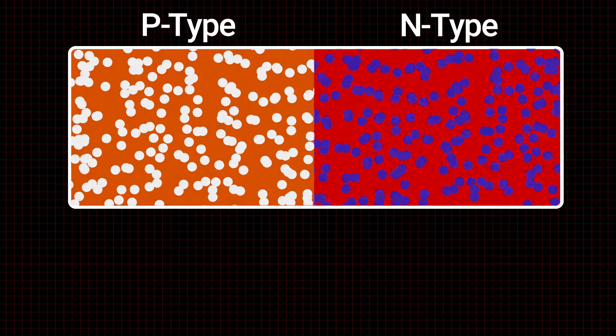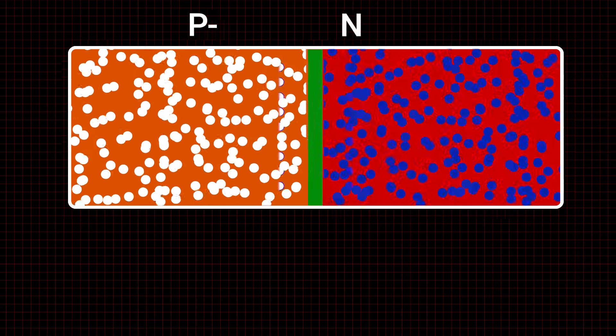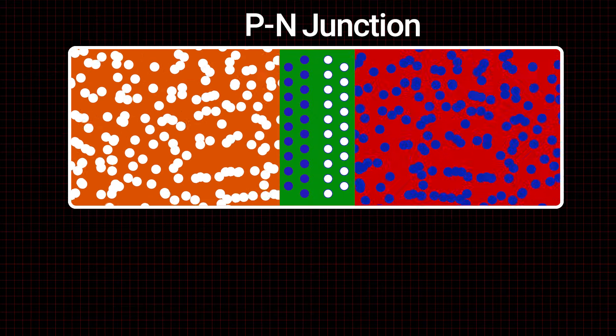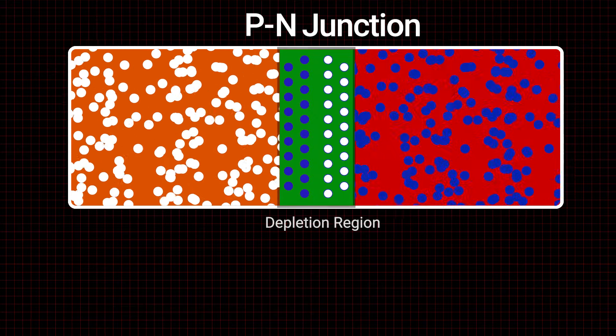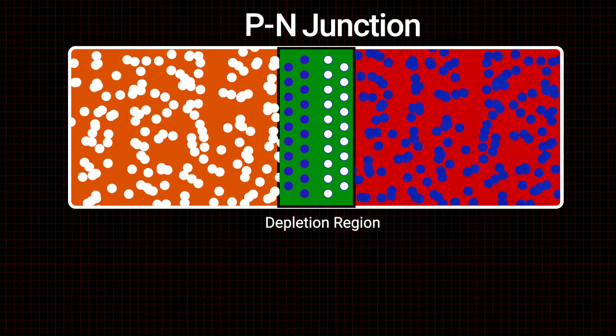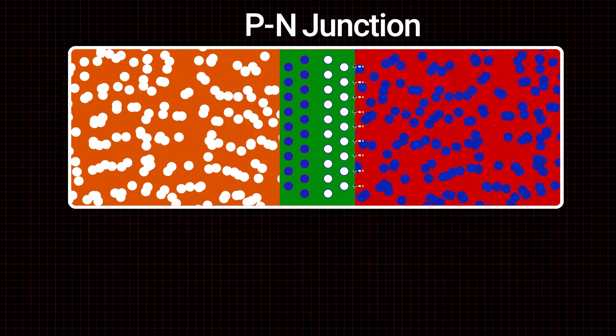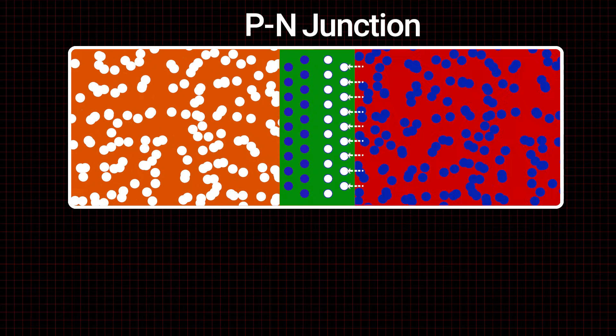These two sections meet to form a p-n junction, where some of the free electrons are attracted to the holes in the p-type material, leaving holes in the n-type material and resulting in a depletion region. The net electrical charge in this region creates an electrical field that prevents other electrons from moving across the junction to fill additional holes.